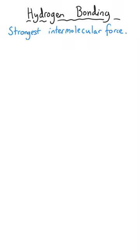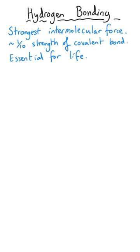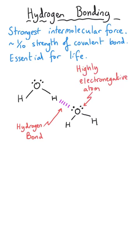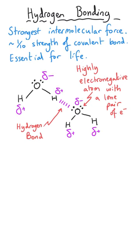Hydrogen bonding is the strongest type of intermolecular force, and it has a lot in common with permanent dipole-dipole forces, but it is a particularly extreme example of how two molecules can be attracted to each other. It's crucial to life as we know it. A hydrogen bond is an attraction between a molecule that has a highly electronegative atom — such as oxygen, fluorine, or nitrogen — and a lone pair on one of those atoms attracted to an electron-deficient hydrogen in a neighbouring molecule. Both features are needed within the molecules forming that hydrogen bond.